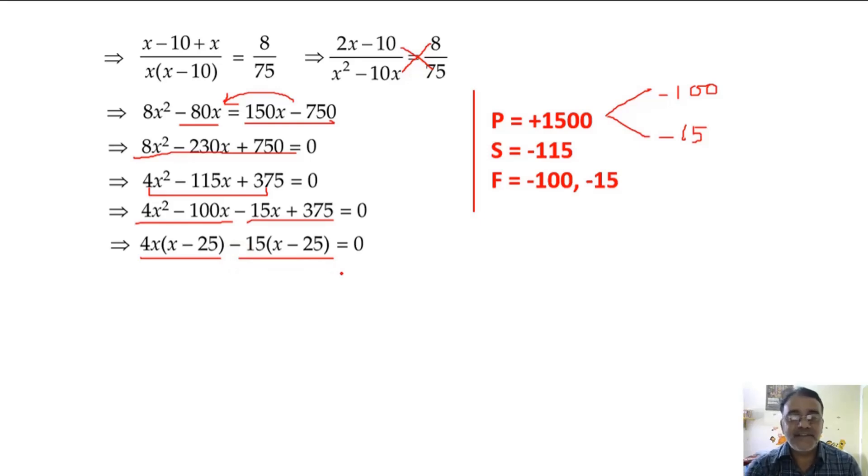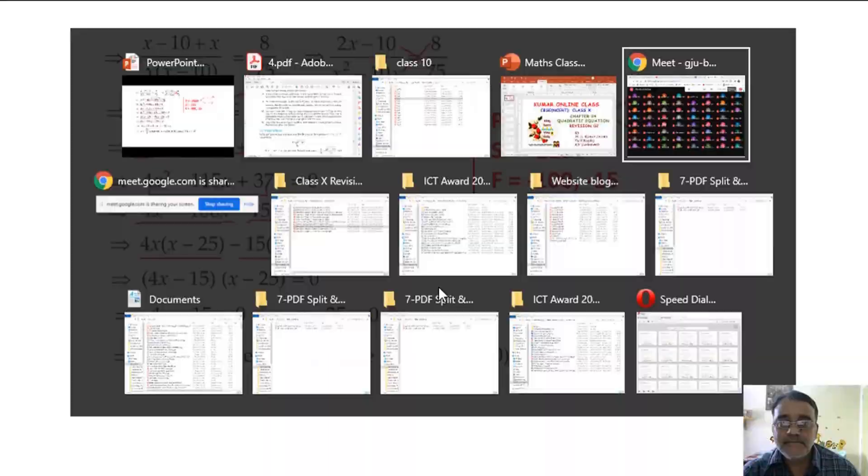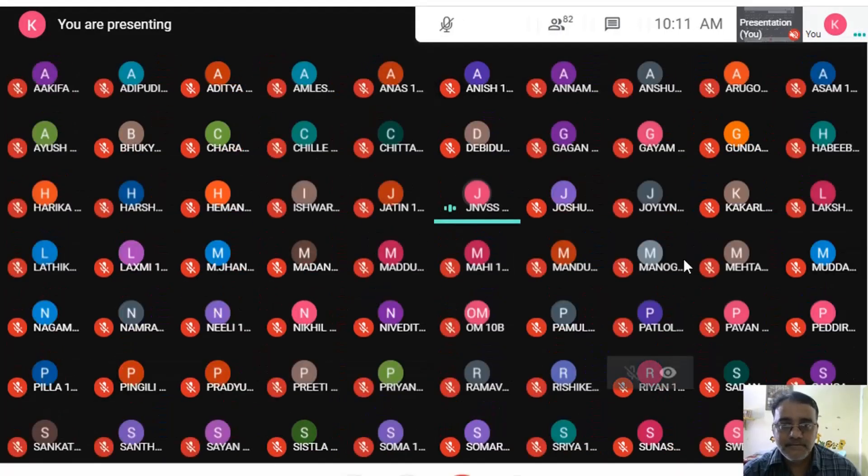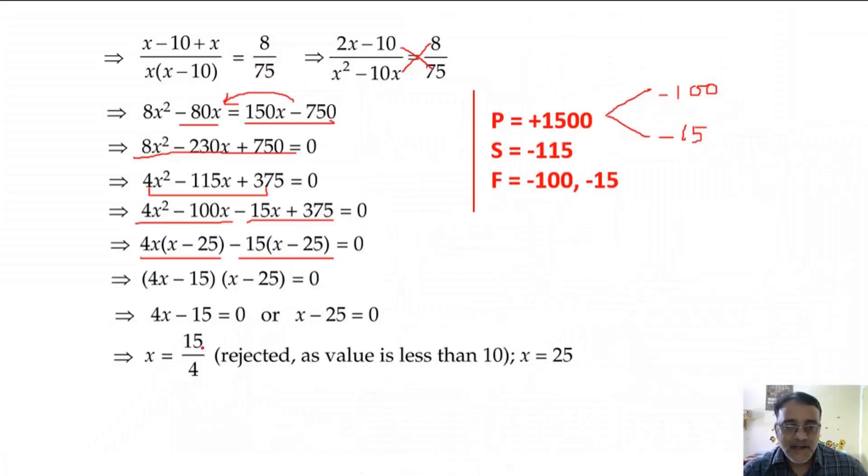x minus 25 is common in both terms, so we can take it common. Finally, we will get two values: x equals 15 by 4 and x equals 25. Now this we have to reject. Why? Because this value is less than 10.